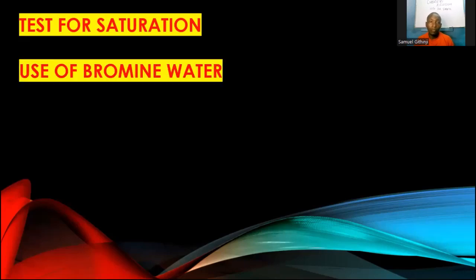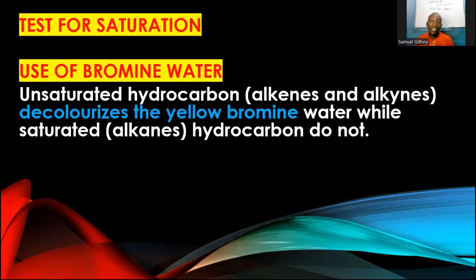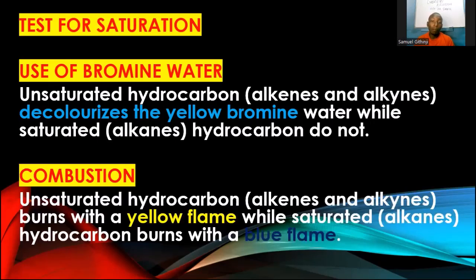The test for saturation using bromine water: bromine water is yellow. Unsaturated hydrocarbons — alkenes and alkynes — will decolorize the yellow bromine water to colorless. Saturated alkanes will not decolorize it. For the combustion test: unsaturated hydrocarbons burn with a yellow sooty flame, while saturated hydrocarbons burn with a blue flame.